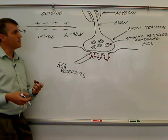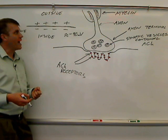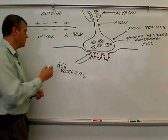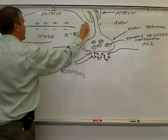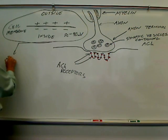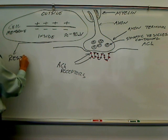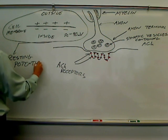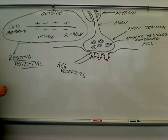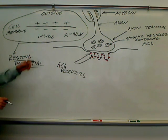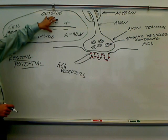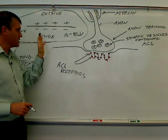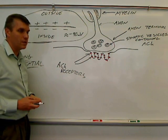So the outside is positive, the inside is negative. That, again, is resting potential. So this is when the muscle is not contracting. The muscle fiber is not contracting. It's just resting. It's waiting for the next impulse to come from the neuron.